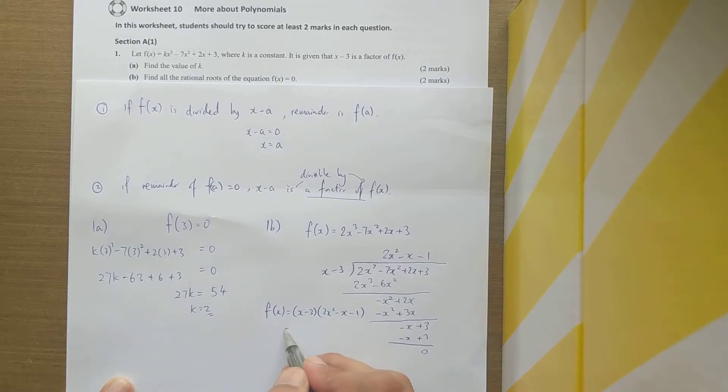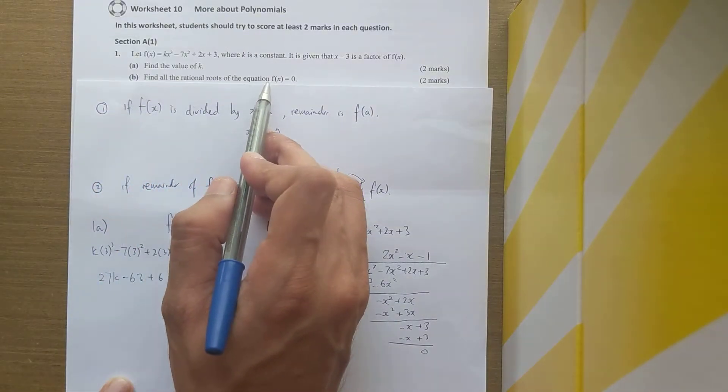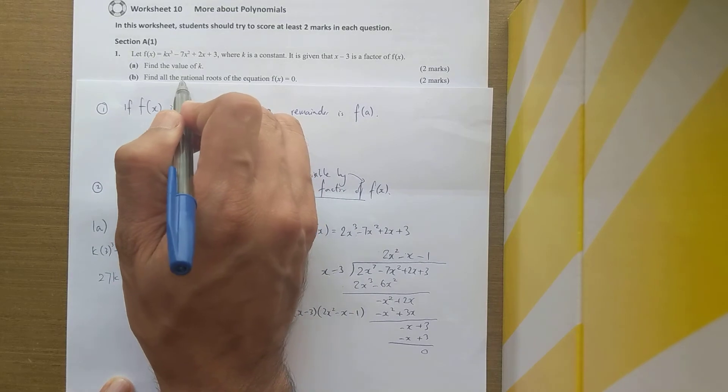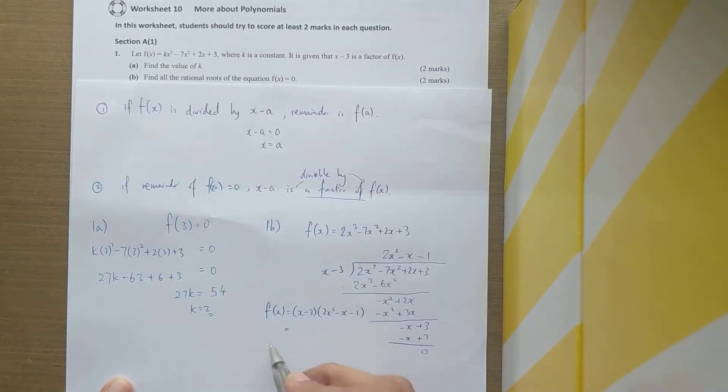Because they're asking us to find the roots when f(x) is equal to 0, I'll get a root from here, but then I also need to find what the roots are here. In this case, when they ask you rational roots, immediately I'll be thinking about the quadratic equation—the quadratic formula, excuse me.